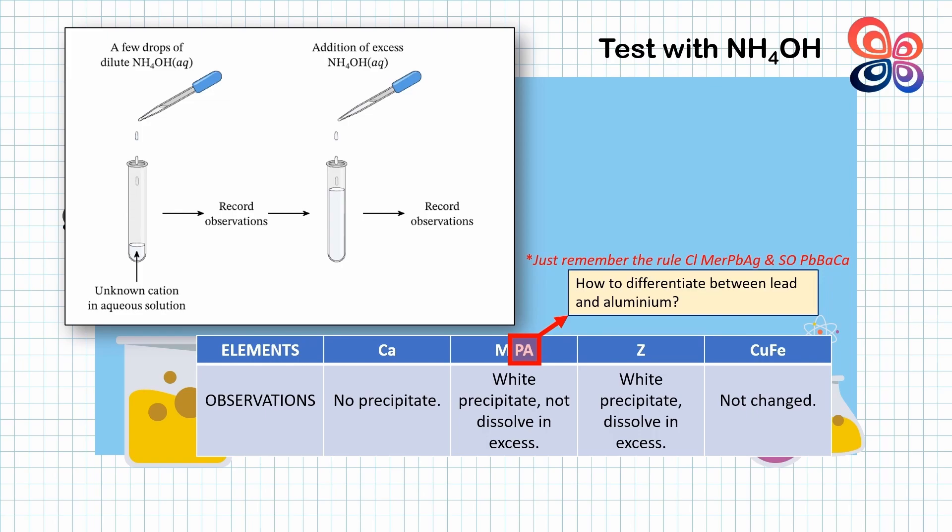We just remember the rules that we have learned in previous topics. In this case, we can react the salt containing lead and aluminium with salt that contains chloride, bromide, iodide, or sulfate.